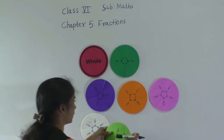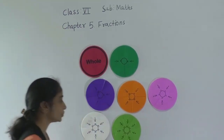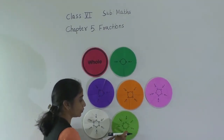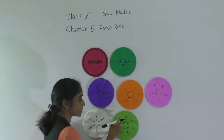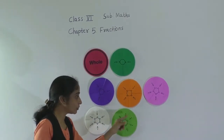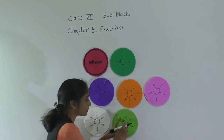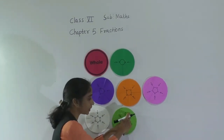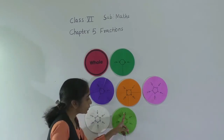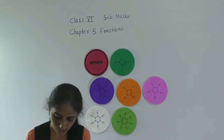Same way, the figure is divided into seven equal parts: one, two, three, four, five, six, seven. So each part is one seventh. This is one of the seven parts — one part from all of the seven parts. Each part is one upon seven, one seventh.